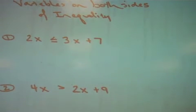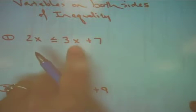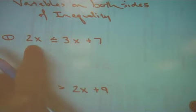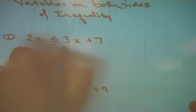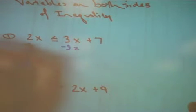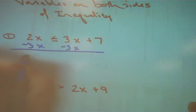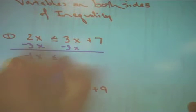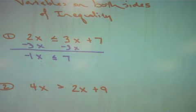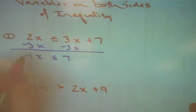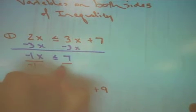Number 1, 2x is less than or equal to 3x plus 7. So the first thing I need to do is get my x's together. It's going to make more sense to move this 3x over here so that my 7 is alone. So I'm going to subtract 3x from both sides and I get negative 1x is less than or equal to 7. Now I have to get the x totally alone. I'm going to divide both sides by negative 1.